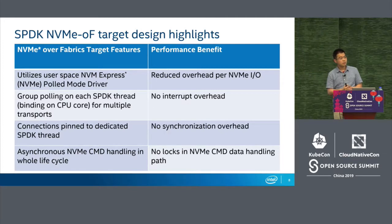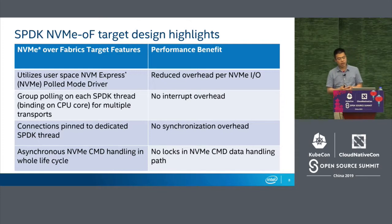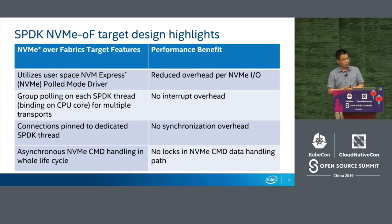How we assign connections to each polling group is determined by algorithm - the current algorithm is sufficient. One connection is mapped to an NVMe IOQ, and we guarantee the CPU will operate and handle that connection with no resource competition. Many command handling on the target side is processed by a different deployment layout with no locks, so to a great extent we can improve performance, especially for IO queue depth.